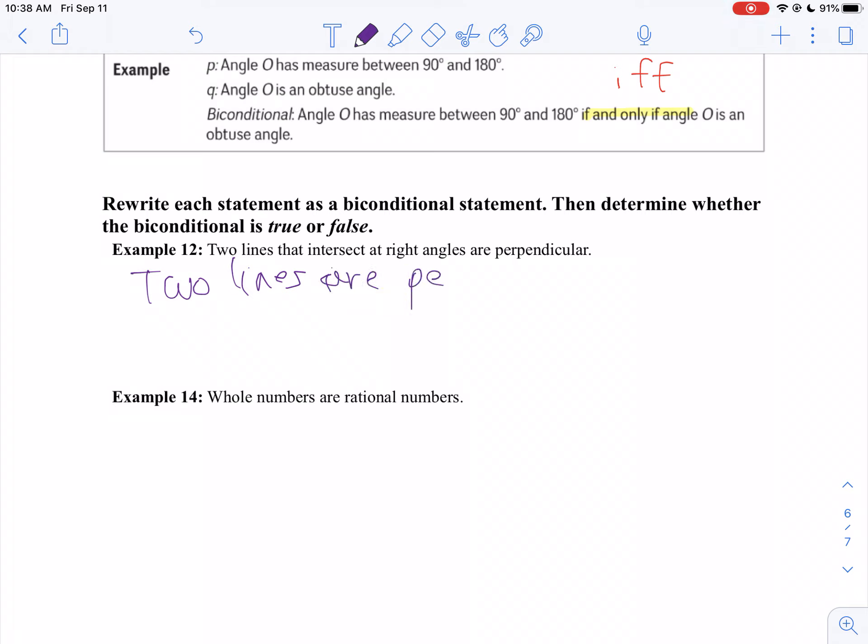I'm going to start with the last one this time. Except I can't spell perpendicular. Let's try that again. If and only if they intersect at a right angle.